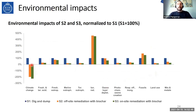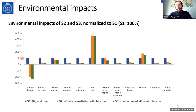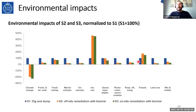The life cycle assessment results show that the two biochar scenarios — off-site remediation in orange and on-site remediation in green — can provide significant greenhouse gas emission savings, reflected by their negative scores. The results are normalized to scenario one at 100%, and in most impact categories the biochar scenarios perform much better than the reference dig and dump scenario.